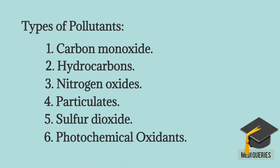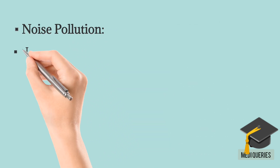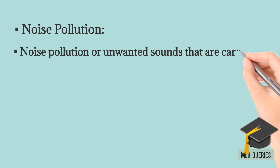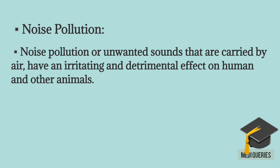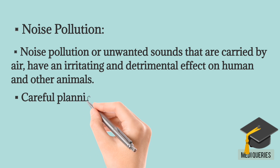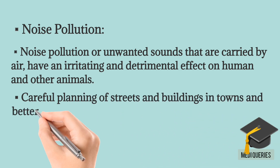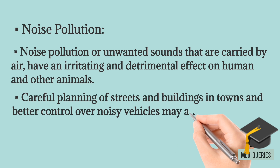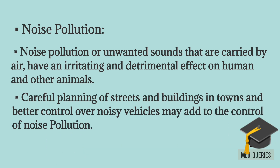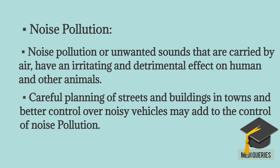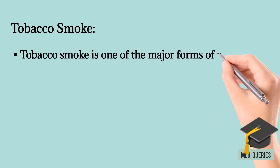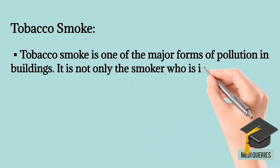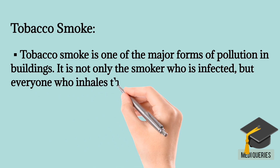Examples of Air Pollution. First is Noise Pollution. Noise pollution refers to unwanted sounds carried by the air, having irritating and detrimental effects on humans and other animals. Careful planning of streets, buildings, and better control over noisy vehicles may help control noise pollution. Next is Tobacco Smoke, which is one of the major forms of pollution in buildings — it is not only the smoker who is affected but everyone who inhales the polluted air.